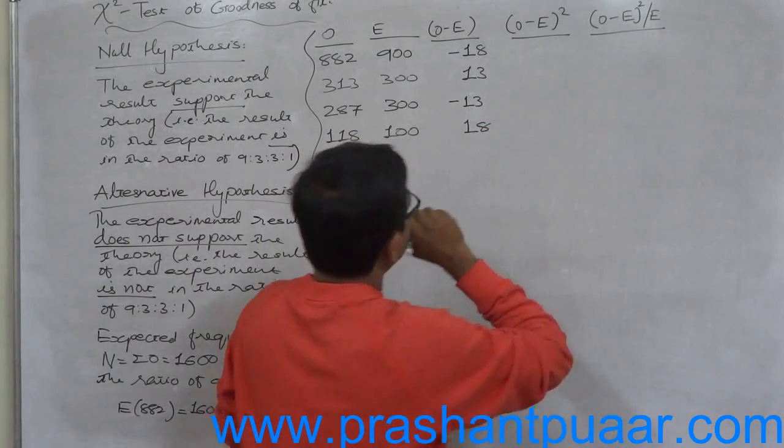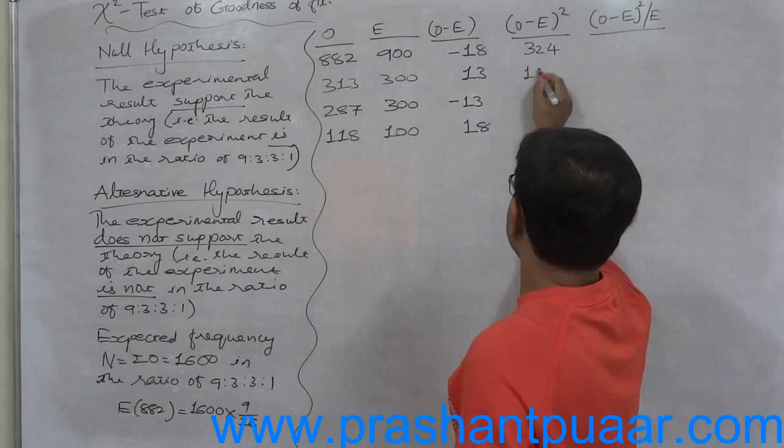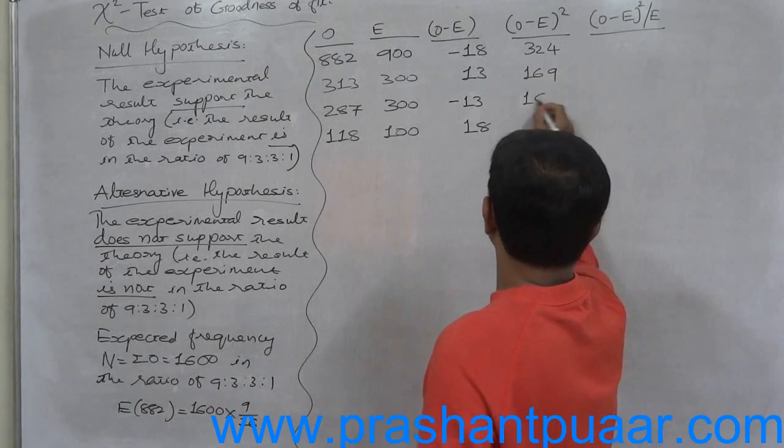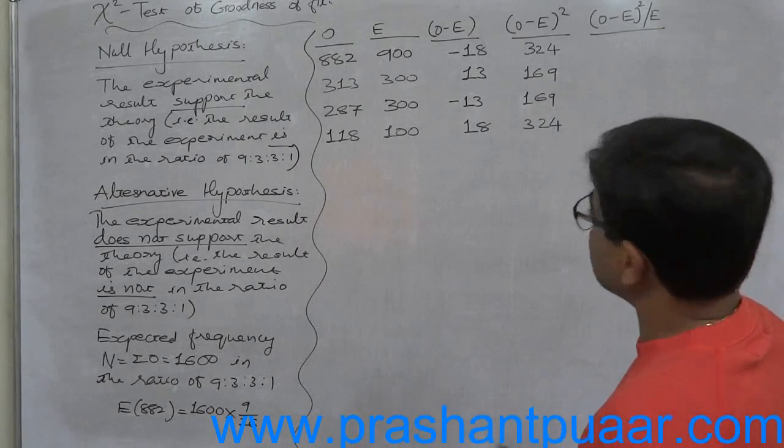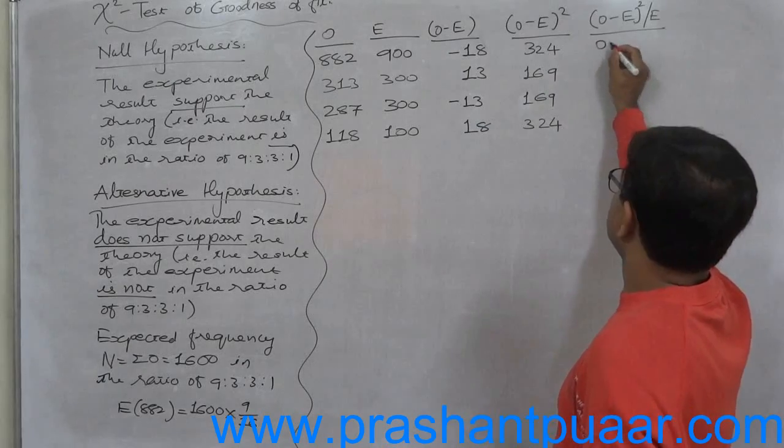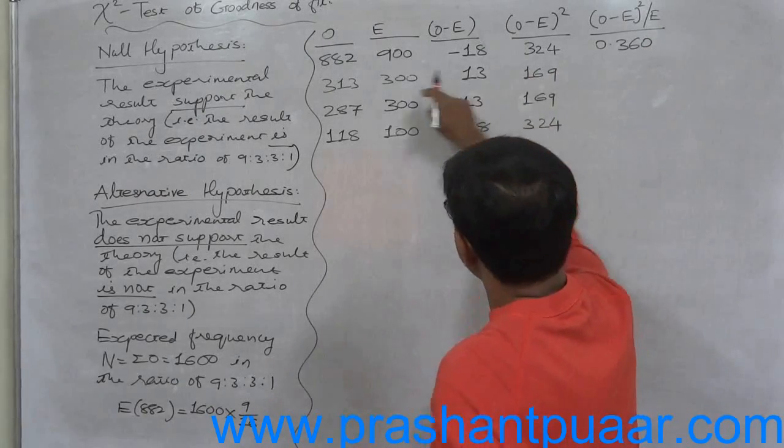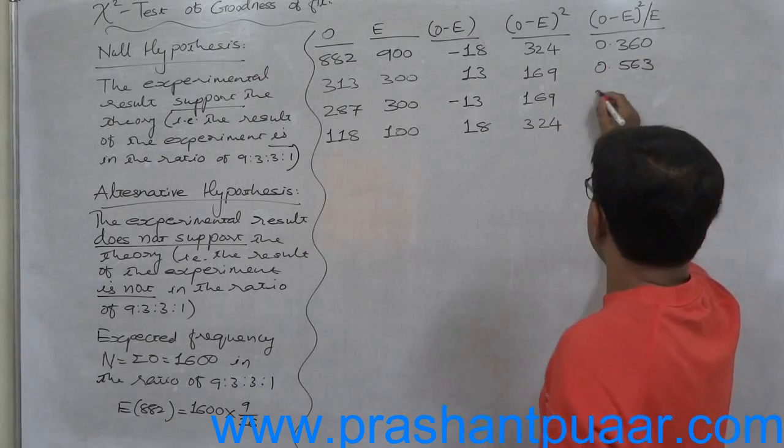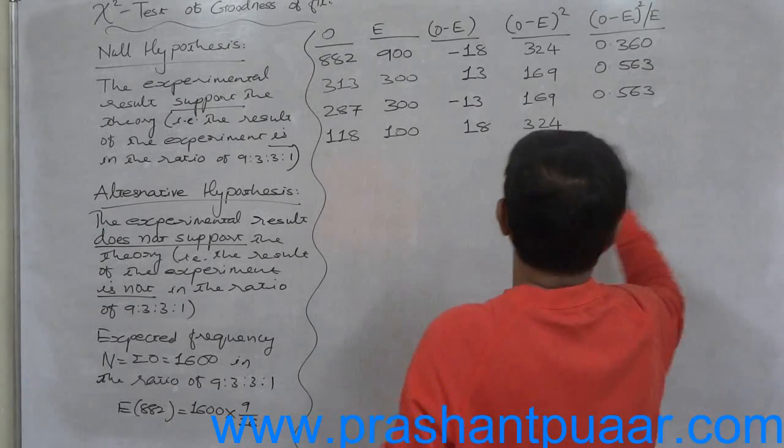O minus E whole square: 18 squared is 324, and 13 squared is 169. Now O minus E square divided by E: 324 divided by 900 equals 0.36, then 0.043, 169 divided by 300 equals 0.563, next will be the same 0.563, and 324 divided by 100 equals 3.240.